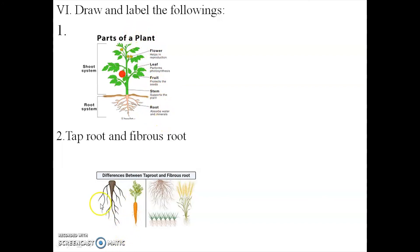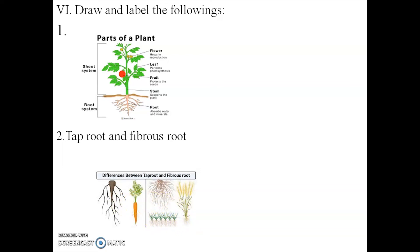Second picture: tap root and fibrous root. Tap root shows one long main root deep into the soil with many hair-like roots on the main root. Fibrous root shows a bunch of small pushy roots present on the stem. Example of fibrous root: wheat. I hope all of you understood this question time very well. Thank you.